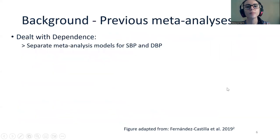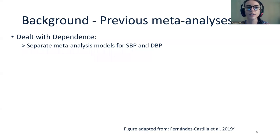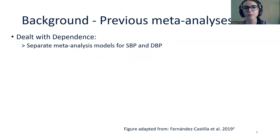There have been some previous meta-analyses on this topic which used standard pairwise univariate meta-analysis, meaning they dealt with the dependence between systolic and diastolic blood pressure by conducting separate analyses for each outcome.